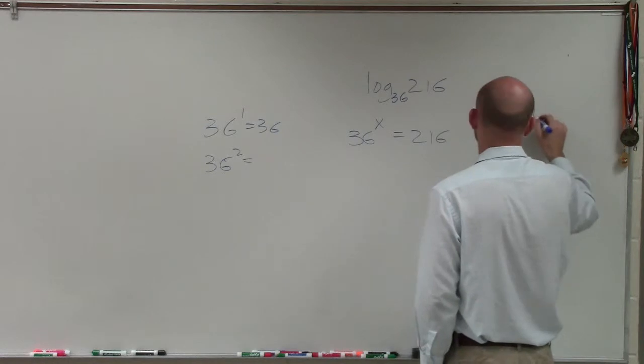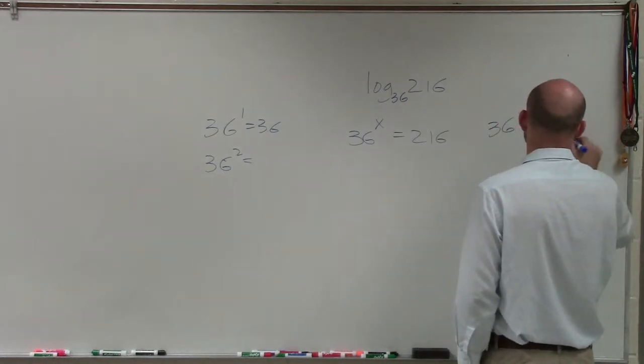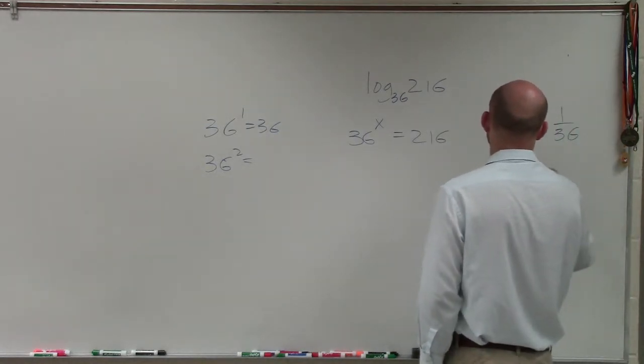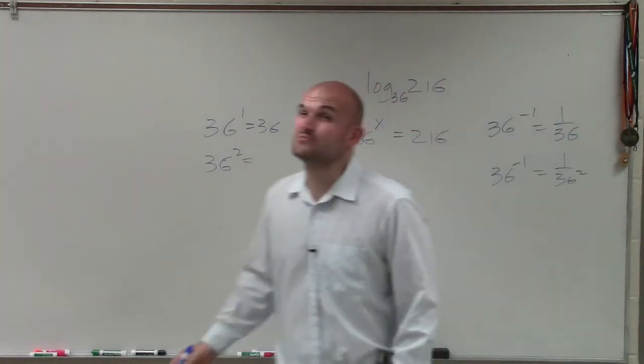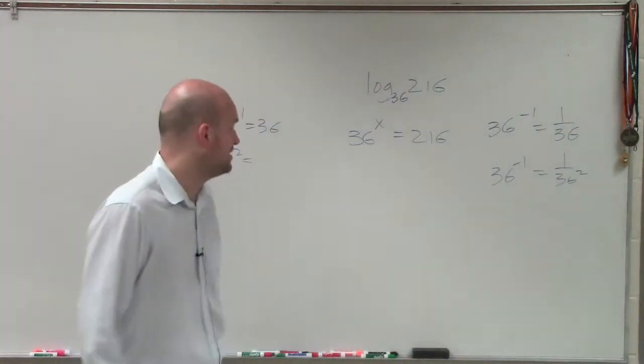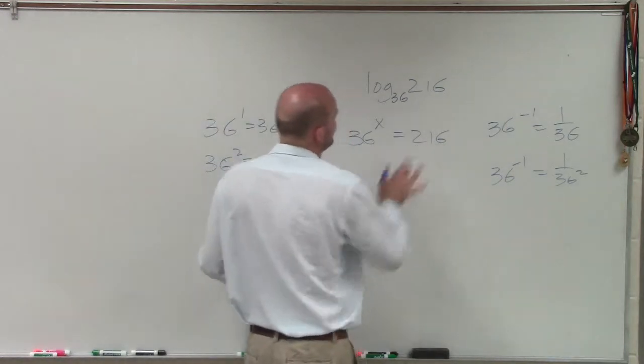I could probably get into 36 to the negative first—it's going to be 1 over 36. And if I did 36 to the negative second, it's going to be 1 over 36 squared. That's going to be a very small number, getting very close to 0. So it's not getting me anywhere really near 216.